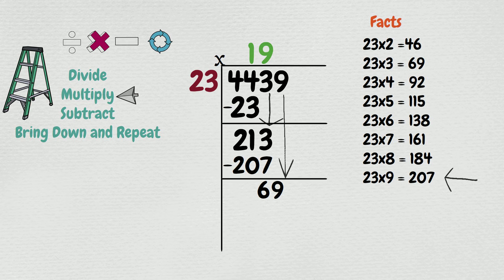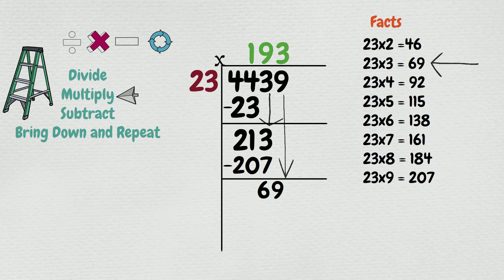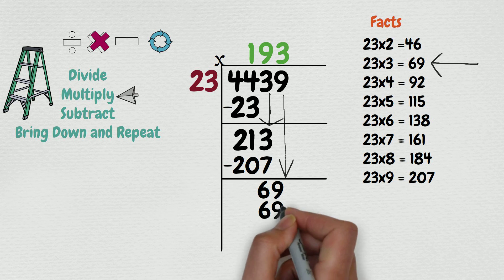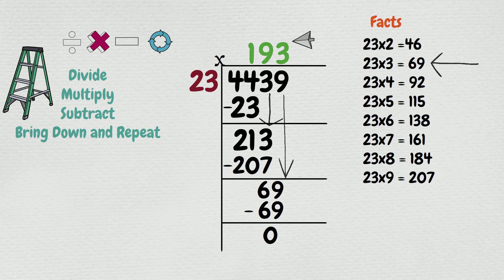How many times does 23 go into 69? Using our multiplication facts from before, it goes in 3 times. Put the 3 on top, and if you subtract at the bottom we get 0. So our answer is 193.